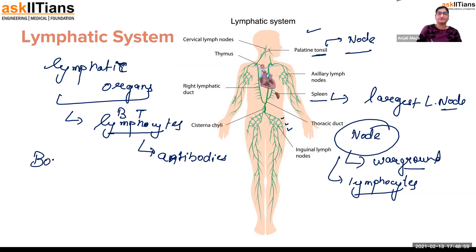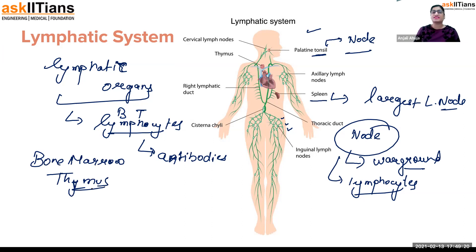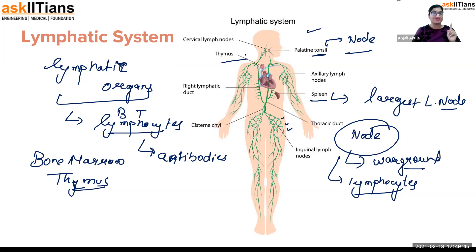Lymphatic organs are where lymphocytes are formed. Lymphocytes are of two types — B and T lymphocytes — and these make antibodies in our body to fight against pathogens. Lymphatic organs include bone marrow and thymus. Bone marrow is present in all long bones of the body — like the arm, thigh, and back bones. Thymus is present just below the thoracic cavity, near the chest center. Thymus is large in babies but shrinks with age, and it also acts as a gland releasing the hormone thymusin, which controls B and T lymphocyte formation.